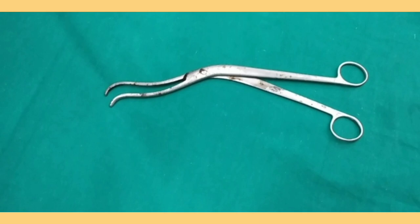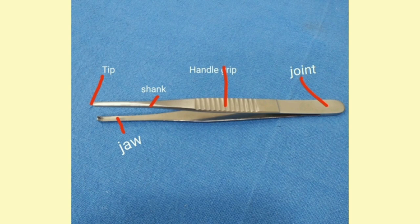This is a Cheatle's forcep. It is a large, heavy metallic forcep with curved blades. The blades have large serrations which help in getting a better hold of instruments being held with it. It has no lock. It is an instrument used to select and pick sterilized and autoclaved articles like drapes and instruments. It is used to avoid touching sterilized articles with hands while transferring them from one tray to another. It is usually kept dipped in an antiseptic solution such as Cidex or cetyl water.